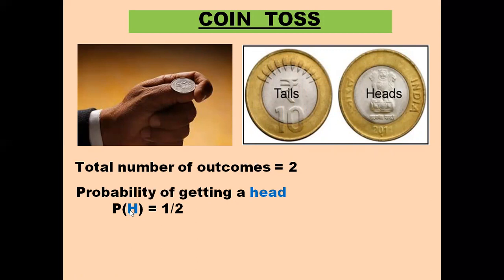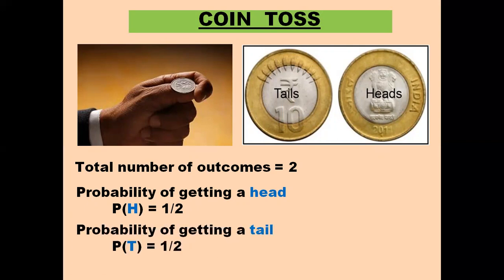This is how we write probability: P, then in the bracket we write head, that is H, equals one-half. The formula of probability: number of ways an event can occur — head can occur only once, so we write one in the numerator — divided by the total number of outcomes, which is two. So P(H) = 1/2. Similarly, probability of getting a tail, P(T), equals 1/2, because tail can come only once when we toss one coin, divided by the total number of outcomes two.